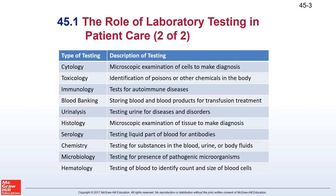Here are some common testing types. Cyto means cell, so cytology is studying cell shape. Toxicology: anytime there's an autopsy under questionable circumstances, they usually run a toxicology report, but it takes forever to get back - usually a month or two. Immunology: if you lost your vaccination card, we might have to take blood and do immunology testing, which tests for antibodies.